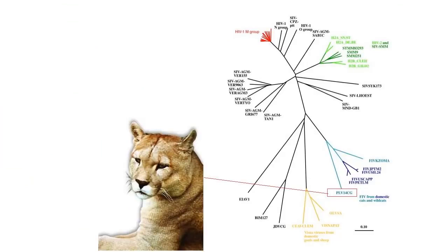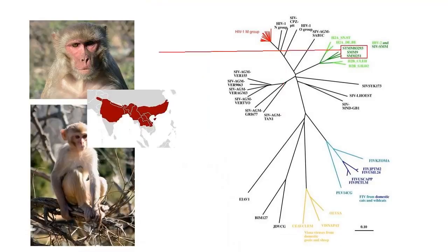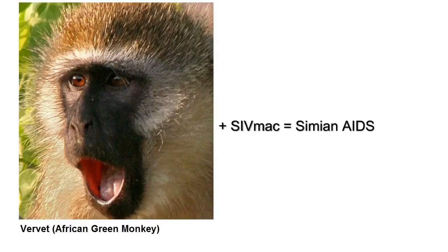There's even a puma lentivirus. Not all of them cause disease under certain conditions. For example, the simian immunodeficiency virus strain that infects African green monkeys doesn't usually cause much disease to its host. The rhesus macaque also has a strain of SIV that causes little or no disease. However, if you take a rhesus macaque — a monkey from Asia — and infect it with the SIV from the African monkey, or if you infect the African monkey with the Asian virus, the result is called simian AIDS and it parallels what we see in humans.